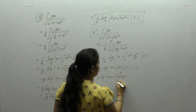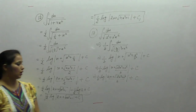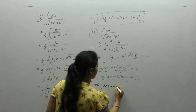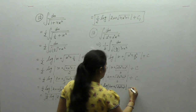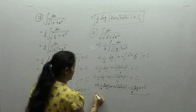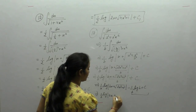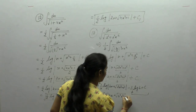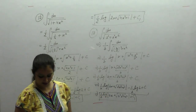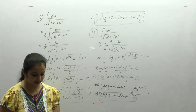Again, we apply the formula for log(a upon b), which equals log a minus log b. So we get 1 upon b times log of (bx plus square root of b square x square plus a square) minus 1 upon b times log b. Since log b and c are both constants, we write another constant c1. Final answer: 1 upon b times log of (bx plus square root of b square x square plus a square) plus c1.